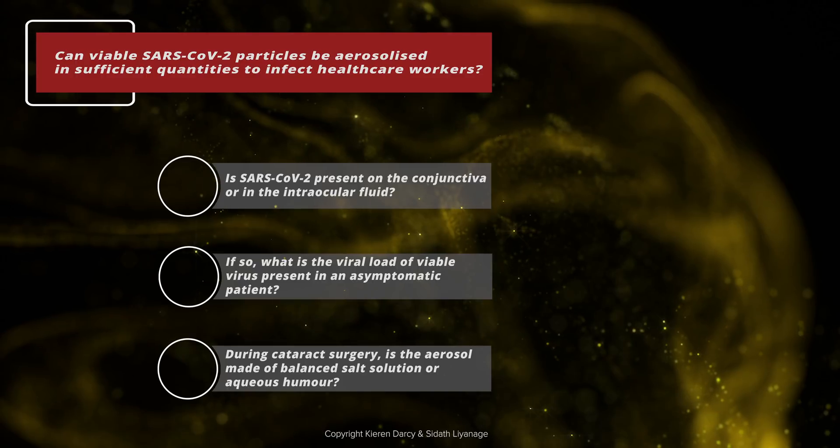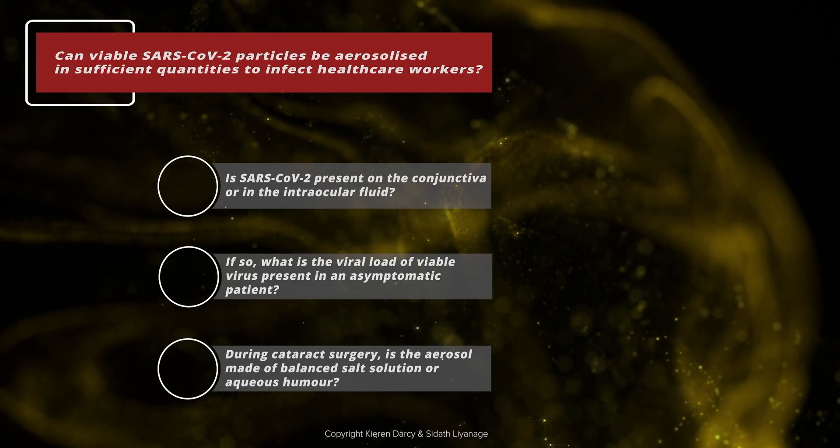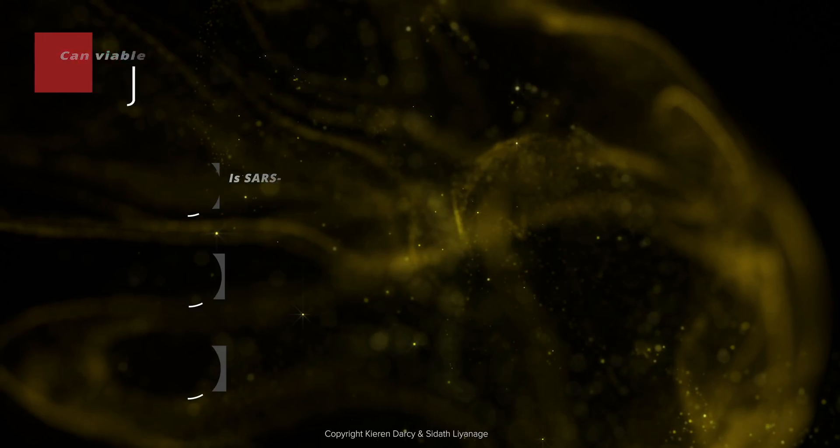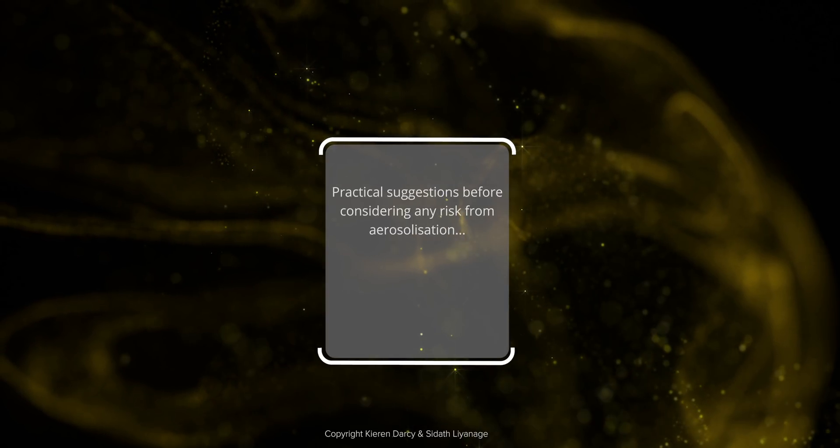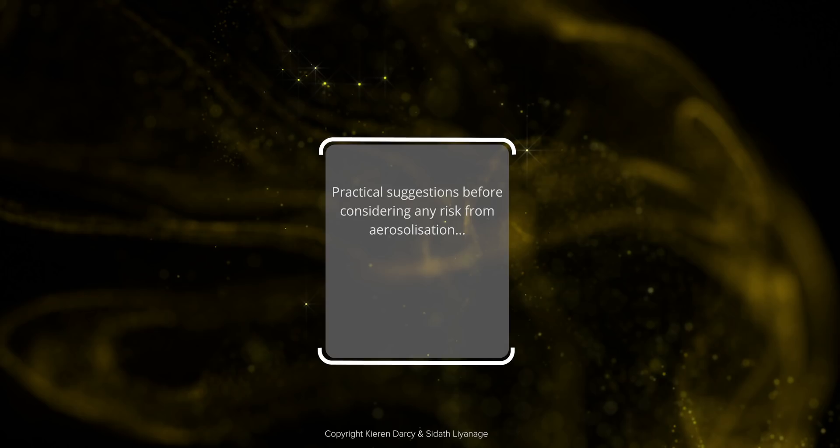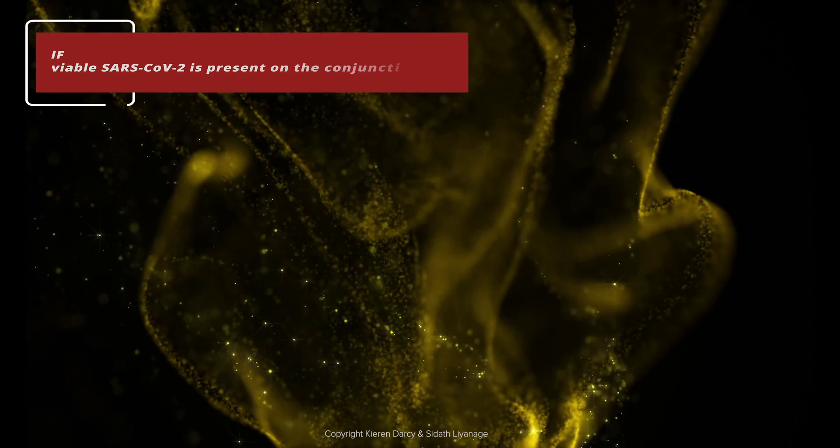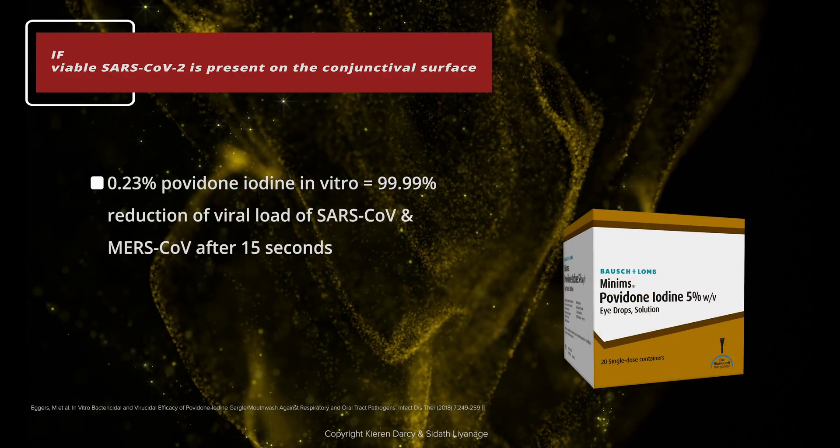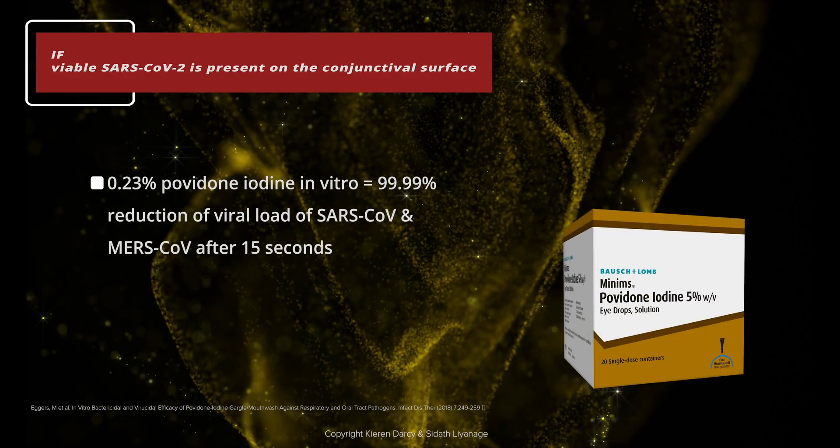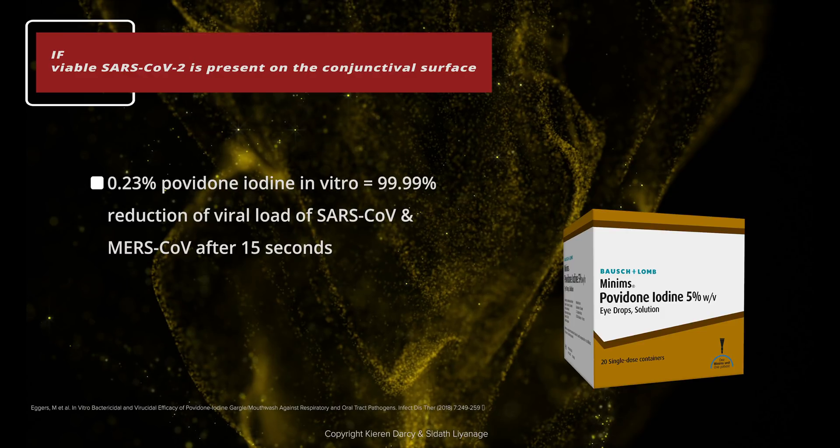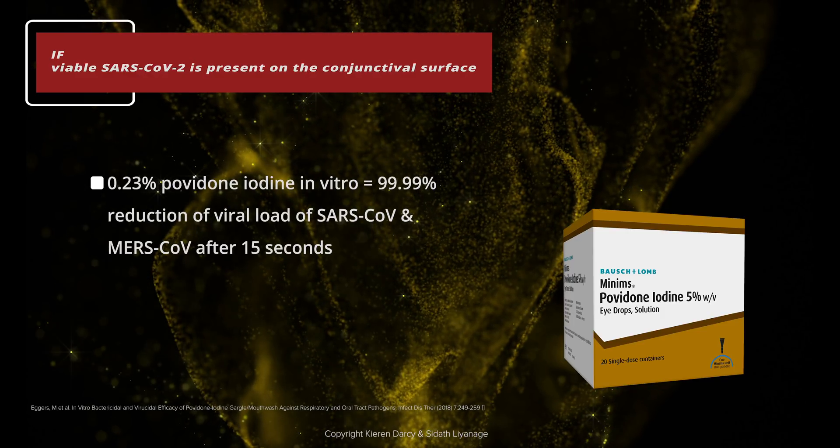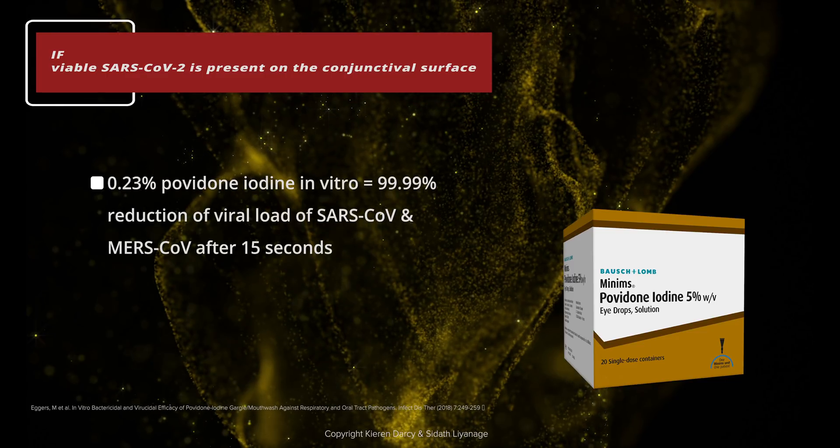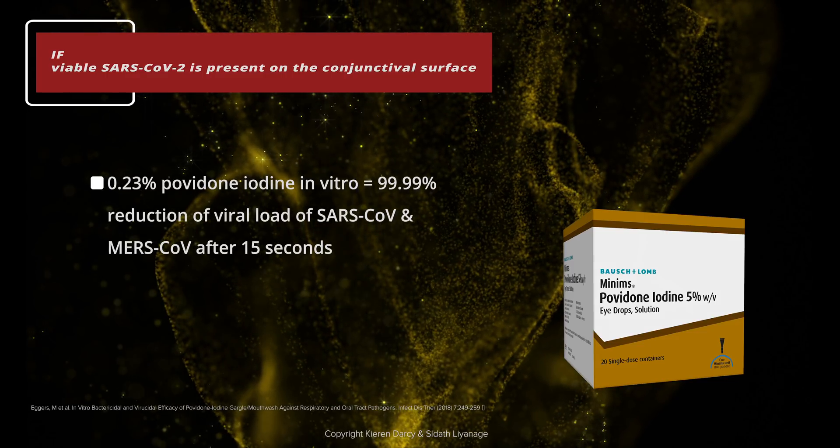We also need to understand more about the aerosol. Is it predominantly made of aqueous humour or balanced salt solution? A review of the literature provides some practical suggestions. Eggers et al. show that in vitro, a 0.23% povidone-iodine solution reduced coronaviral load by 99.9% after 15 seconds. The standard solution used in ophthalmology is a 5% concentration.